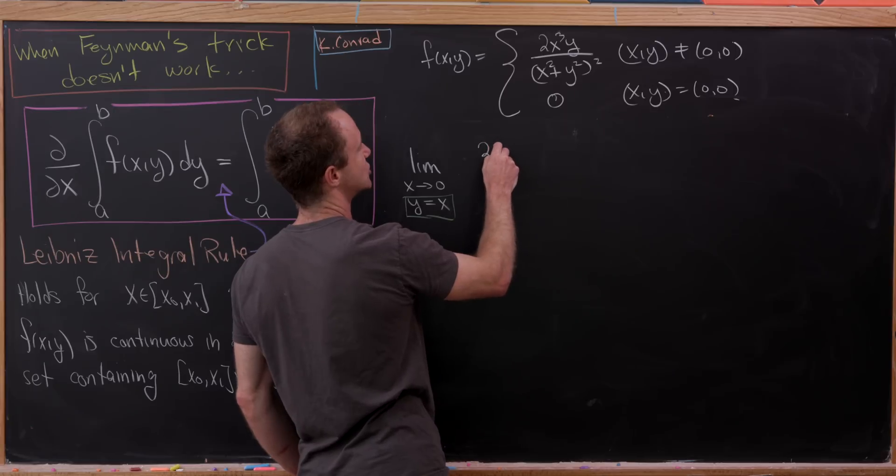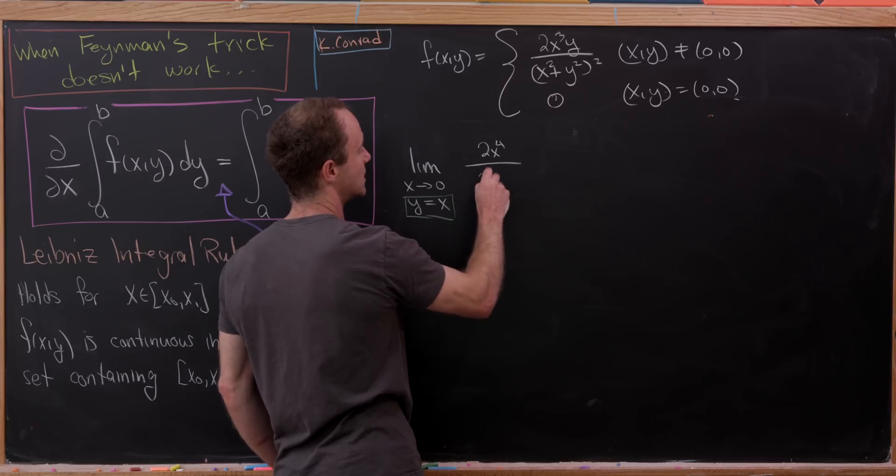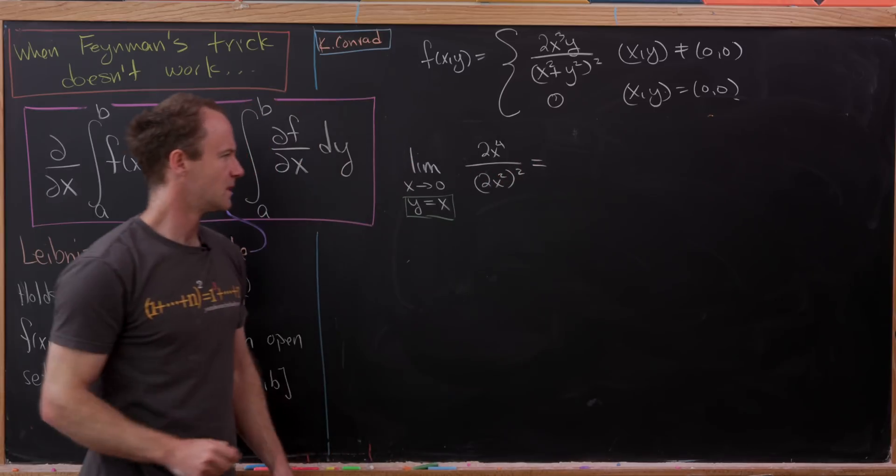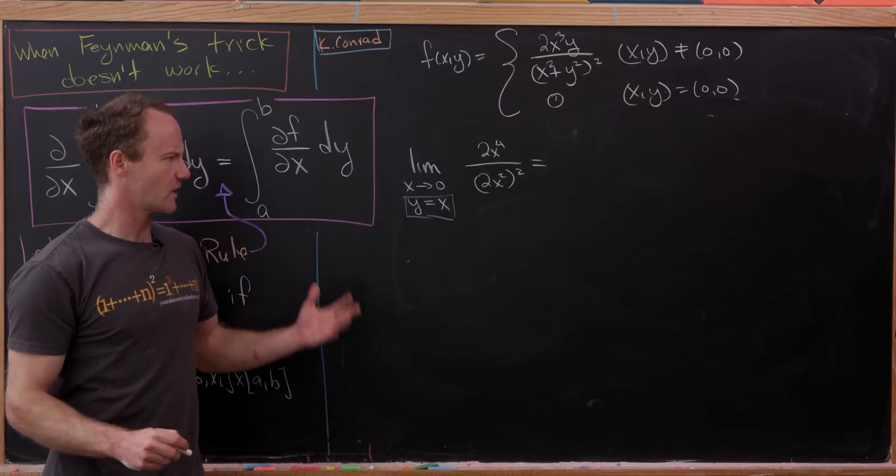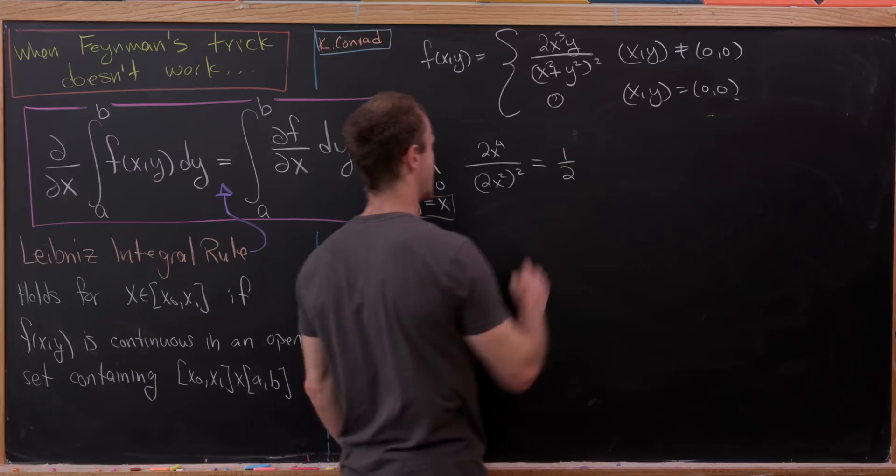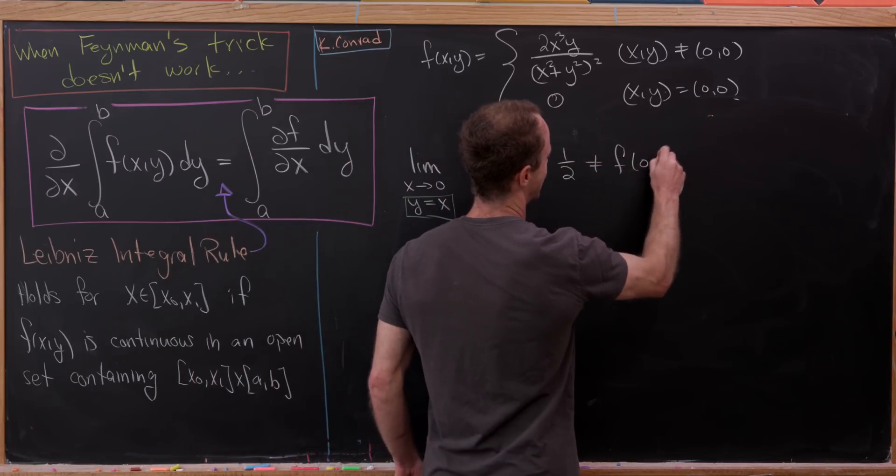So if we go along the line y equals x, then that means this whole thing is going to collapse to 2x to the fourth over 2x squared all squared. So that 2x squared all squared is going to give us 4x to the fourth in the denominator, which is one half. But notice that is not equal to f of 0, 0.